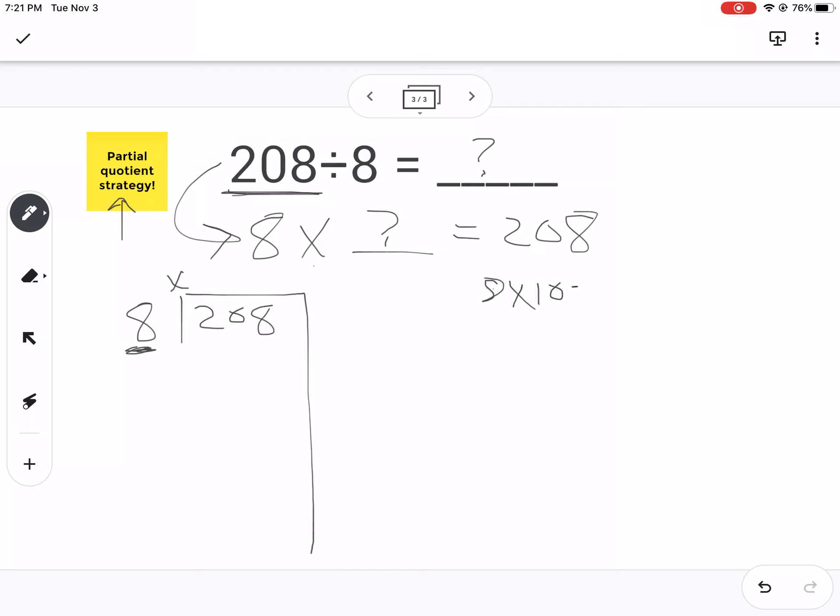So I'm going to start vomiting some multiplication. 8 times 10 is 80. I still have some more. I'm not at 208. So then I'm going to jump. 8 times 20, I know 8 times 2 is 16. So 8 times 20 is 160. I'm still not at 208 yet. Let me see if I do 8 times 30.